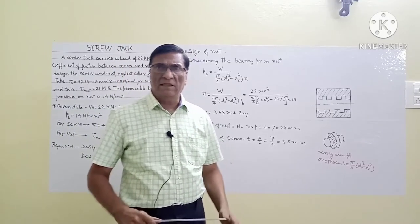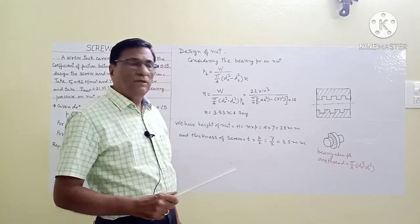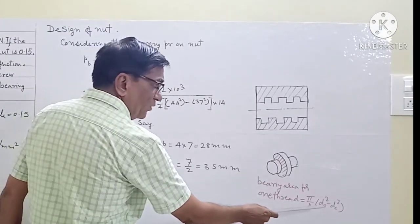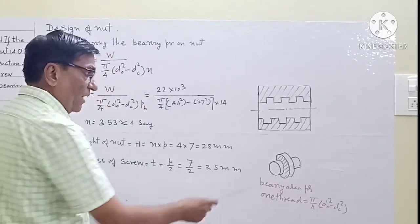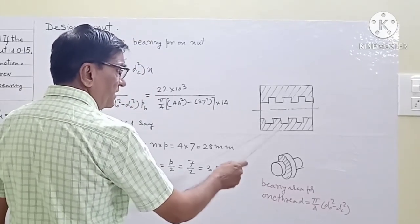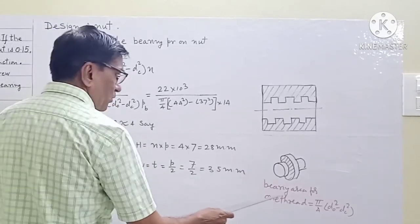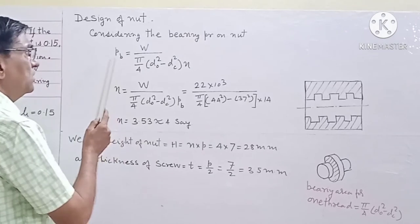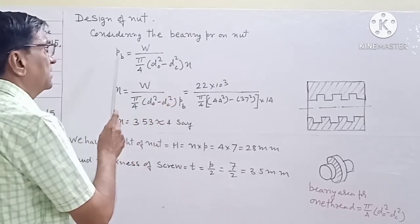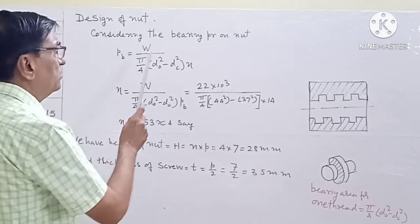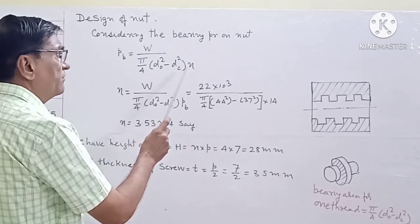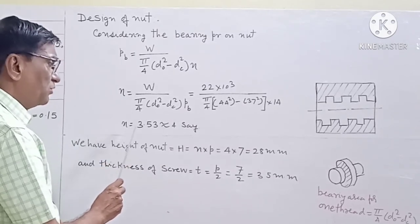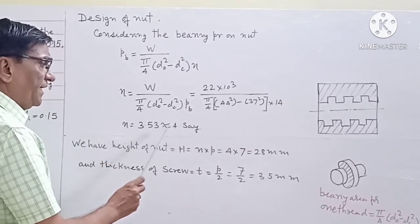Now we will design the nut. We find the dimensions of the nut by considering bearing. The bearing area for a single thread is (π/4)·(DO² − DC²). If N is the number of threads in contact with the nut, the total area is (π/4)·(DO² − DC²)·N. Considering the bearing pressure equation Pb = W / [(π/4)·(DO² − DC²)·N], the number of threads comes out to be 3.53, so we take N equal to 4.